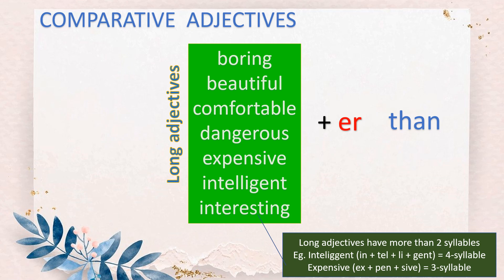Let's see the long adjectives. For example: boring, beautiful, comfortable, dangerous, expensive, intelligent, interesting. These are long adjectives because they have more than two syllables. For example, 'expensive' — already three syllables. 'Intelligent' — you have four syllables. So these are long adjectives.